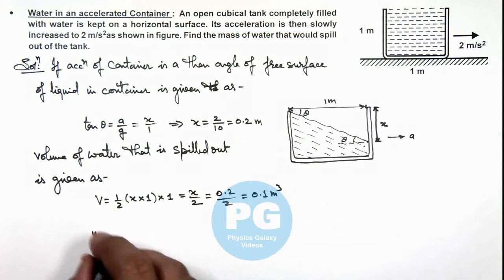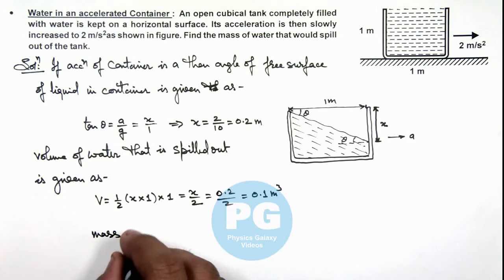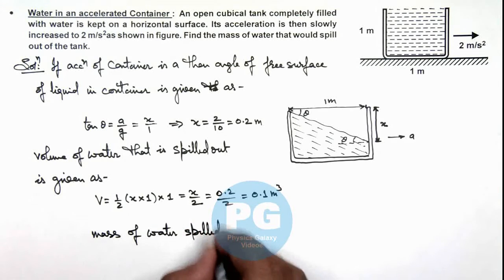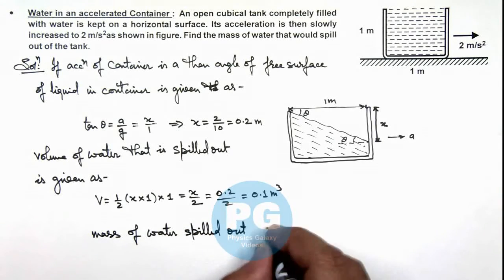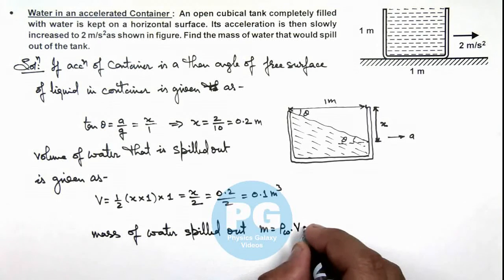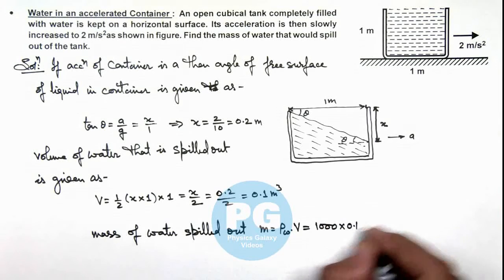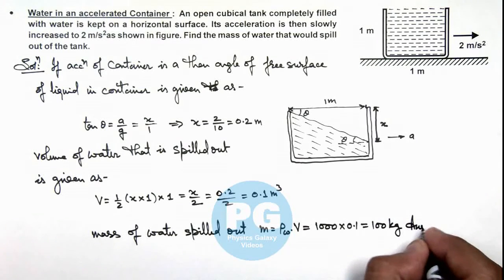So the mass of water spilled out can be given as density of water multiplied by this volume, which is 1000 multiplied by 0.1, equal to 100 kilograms. This is the result of this problem.